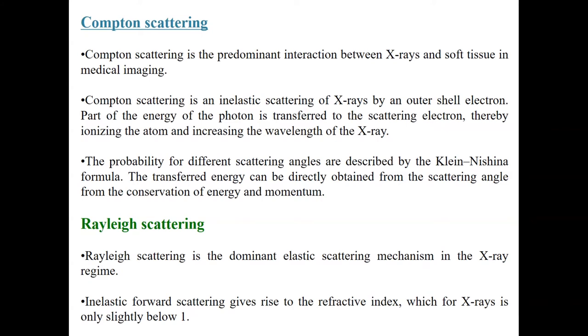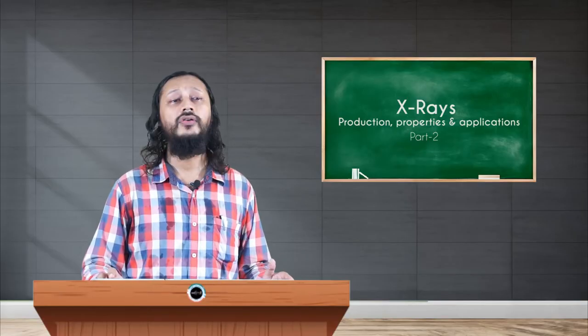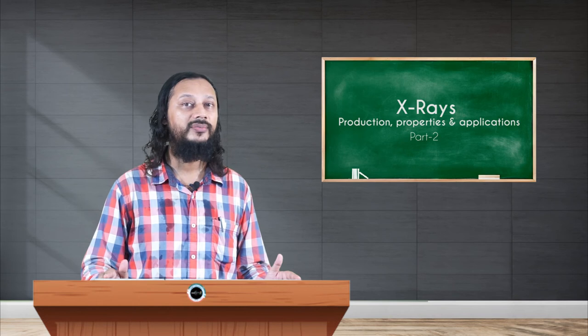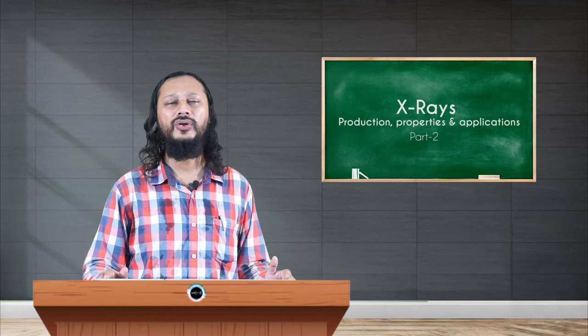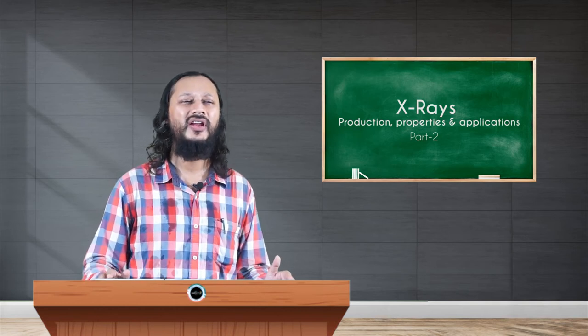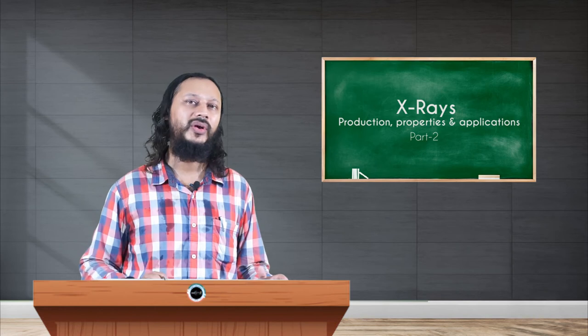The next process in which X-ray matter interaction takes place is the Rayleigh scattering. As you know, Rayleigh scattering is an elastic scattering process where energy exchange or interaction is not there, only momentum conservation happens. Rayleigh scattering is very dominant elastic mechanism in the X-ray regime for lower energy X-rays. Inelastic forward scattering gives rise to some sort of a refractive index. It is as if the X-rays bend, and usually because X-ray photons have such high energy, the refractive index is almost one, slightly lesser than one you could say.